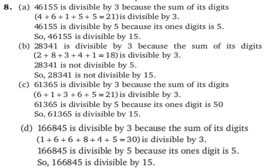Question number 8 — which numbers are divisible by 15? For divisibility by 15, check divisibility by 3 and 5. For part A, the number is 46165. Sum of digits is 22, which is divisible by 3. The ones place is 5, so it is divisible by 5 as well. Therefore 46165 is divisible by 15. Similarly solve B, C, and D parts.